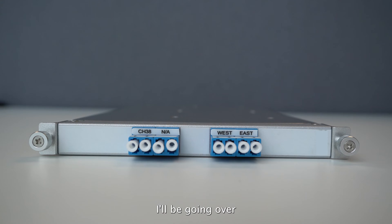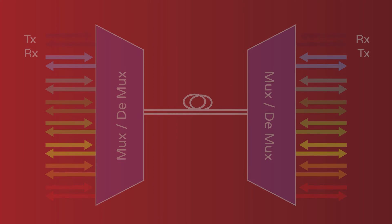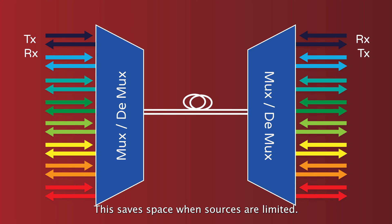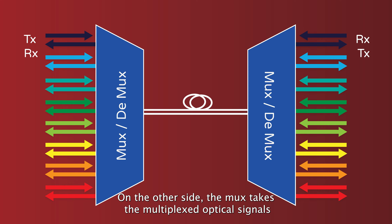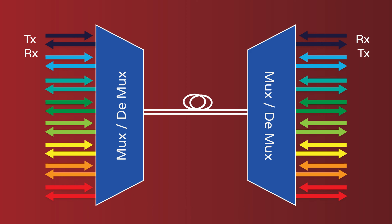I'll be going over what they are, their functions, and the applications they apply to. Let's start off with MUX, which combines multiple optical signals into one medium — this saves space when sources are limited. On the other side, DMUX takes the multiplexed optical signals and extracts them into their separate components by the receiver.